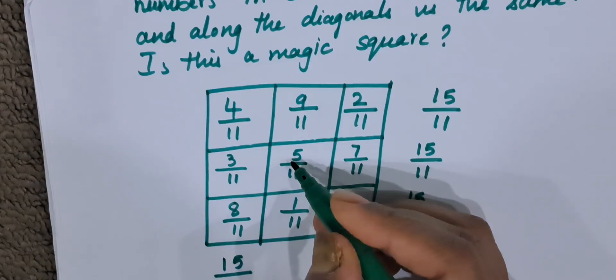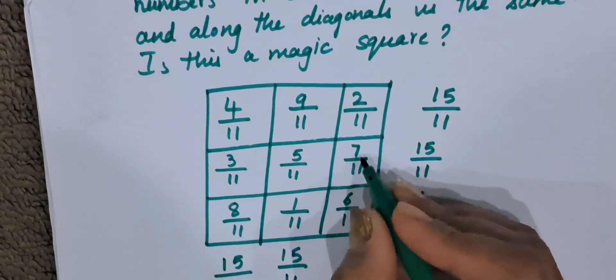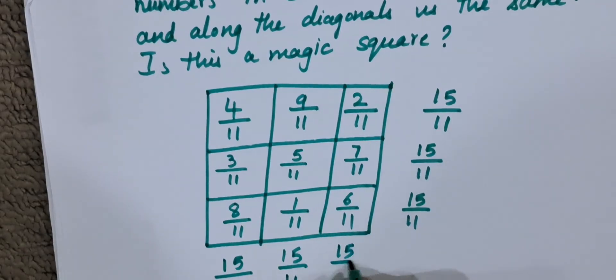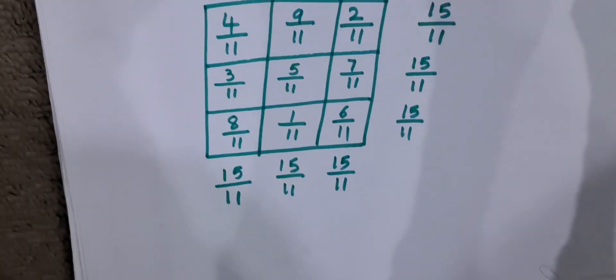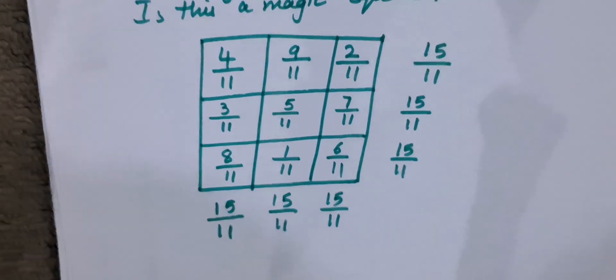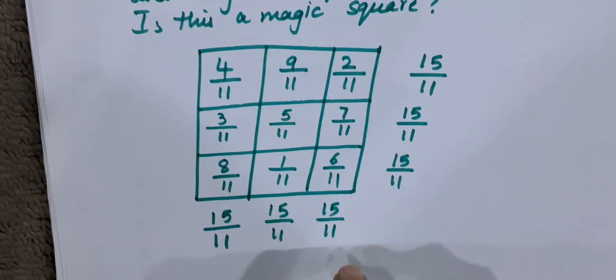9 plus 5 is 14 plus 1 is 15, 15 by 11. 2 plus 7 is 9 plus 6 is 15, 15 by 11. So we have got the sum of all the columns is 15 by 11, sum of all the rows is 15 by 11.